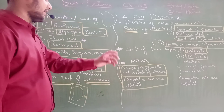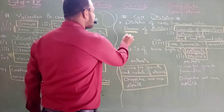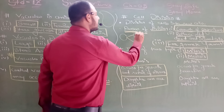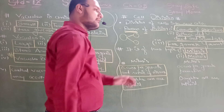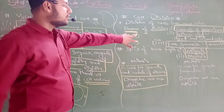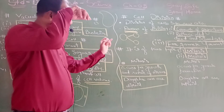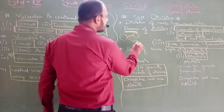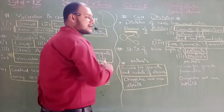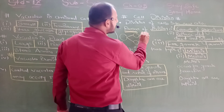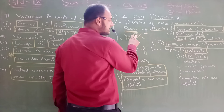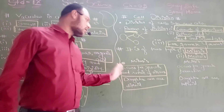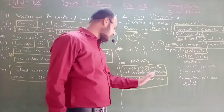In mitosis, daughter cells are diploid. A parent cell is one that divides; the two new cells formed from it are called daughter cells. If those daughter cells divide further, they become the new parent cells producing further daughter cells. So mitosis occurs for growth and repair of tissues, and daughter cells produced are diploid.